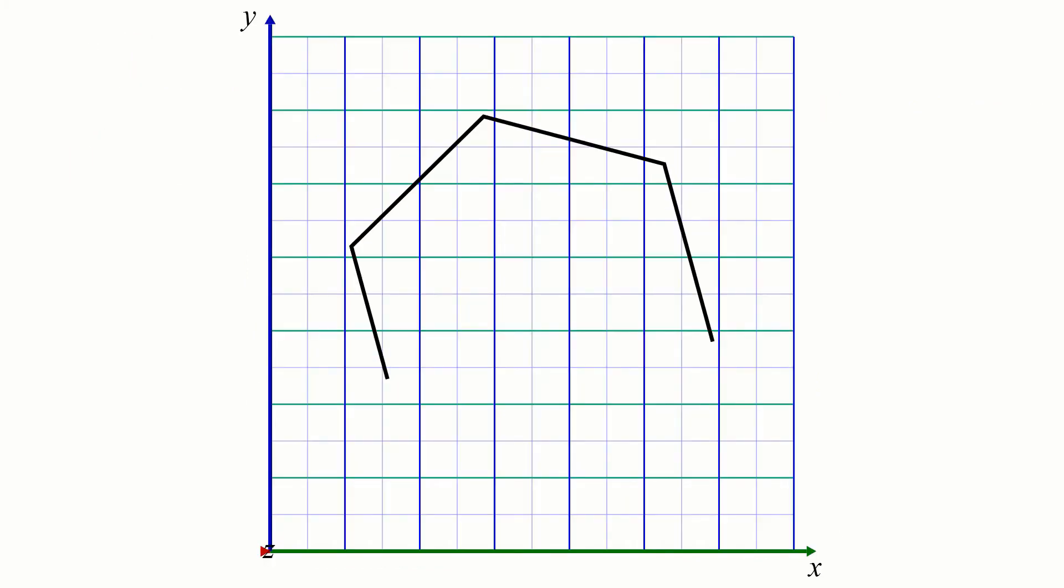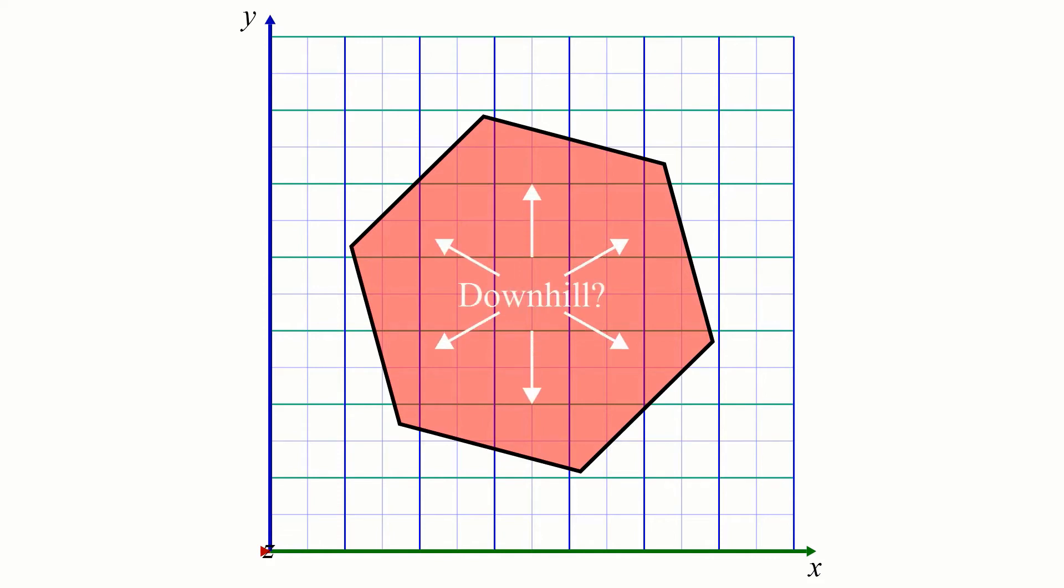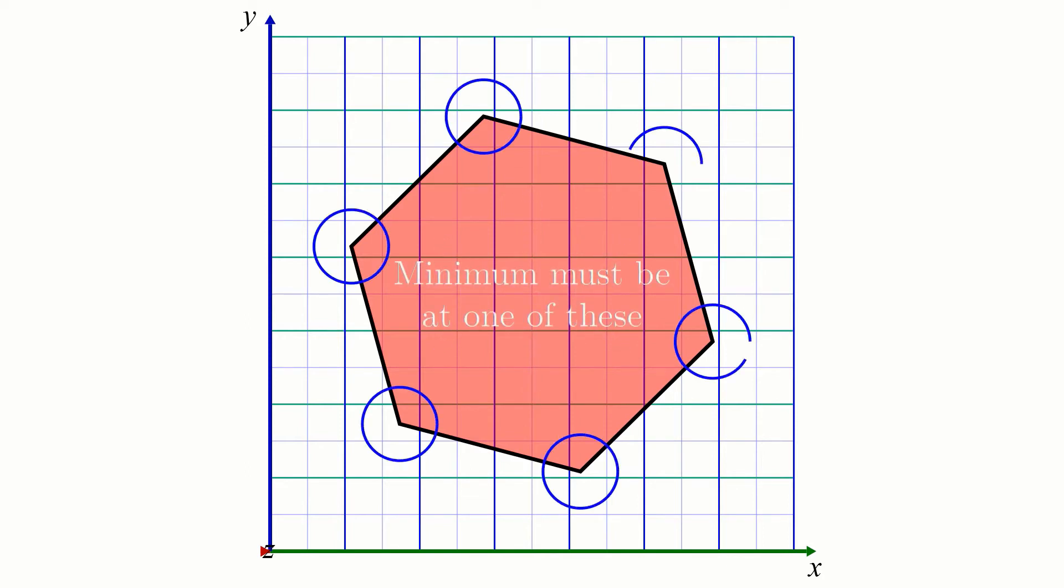This is great news because it dramatically narrows the possibilities for where the optimal point could be. Even if we have no idea which direction is downhill for a given feasible region, we know that regardless, the minimum has to occur at one of the corner points.